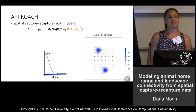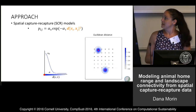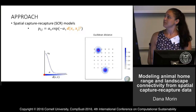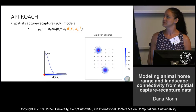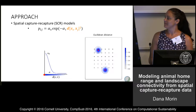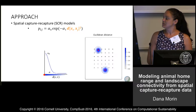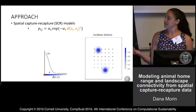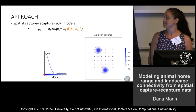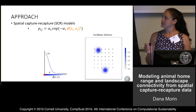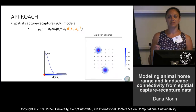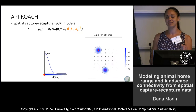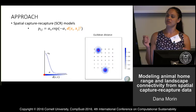As Andy discussed earlier today, we can think about an animal home range — we have spatial capture-recapture models that allow us to estimate population parameters based on where we detect individuals in space. This is the Gaussian bivariate kernel, the detection kernel that Andy discussed. Where we detect individuals is a function of where that latent activity center is located and where the traps or detector arrays are located.